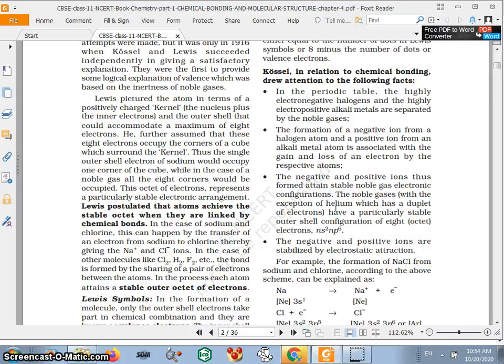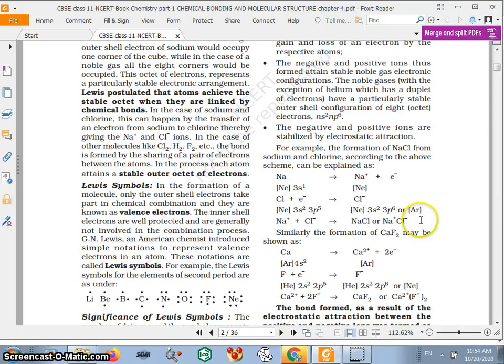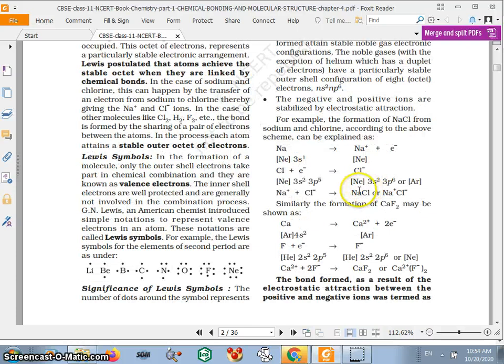The negative and positive ions thus formed attain the stable noble gas electronic configuration. The noble gases, with the exception of helium which has a doublet of electrons, have particularly stable outer shell configurations of eight octet electrons, ns2 np6. The negative and positive ions are stabilized by electrostatic attraction.